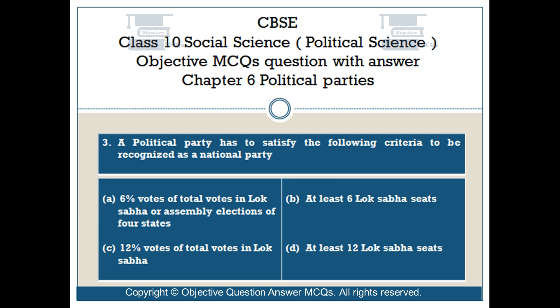Question number 3. A political party has to satisfy the following criteria to be recognized as a national party. Option A: 6% votes of total votes in Lok Sabha or Assembly elections of 4 states. Option B: at least 6 Lok Sabha seats.